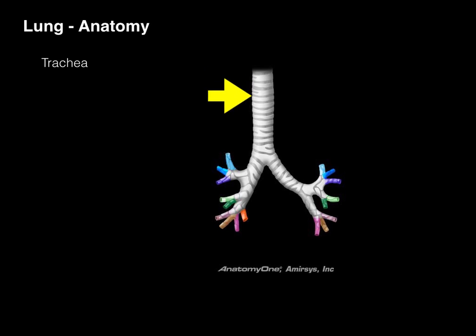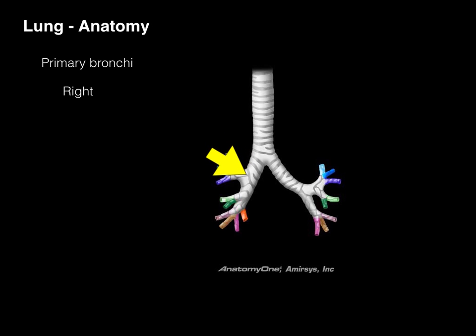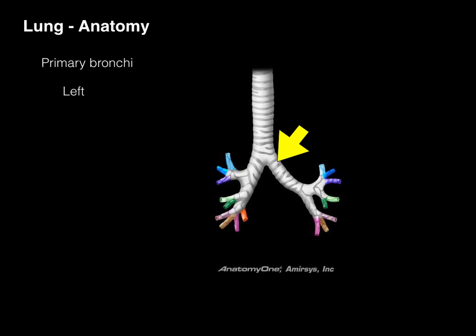The lingula is called that because it looks like a little tongue wagging out. So the airways: we have first the trachea, which is a semi-flexible tube with C-shaped cartilaginous rings segmentally located that help keep the airways open. At the very bottom where the trachea bifurcates is an area called the carina, which is the bifurcation into the right and left primary bronchi, also known as right and left main bronchi. The right primary bronchus is much wider, more vertical, and shorter. The left primary bronchus is more horizontal, thinner in diameter, and longer than its counterpart.